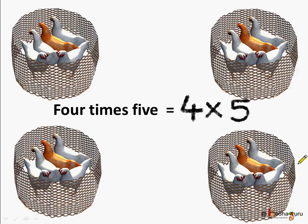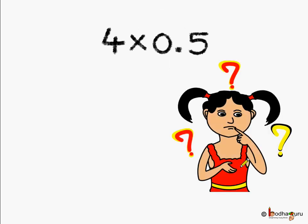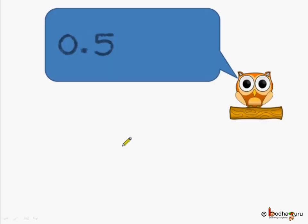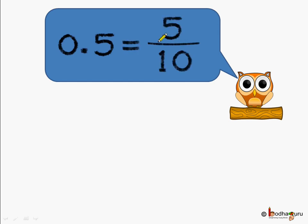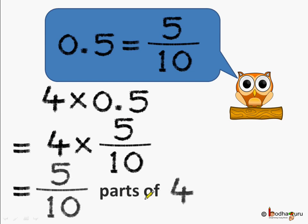We do simple multiplication here — the simple multiplication without decimal point. That's the use of multiplication. If somebody wrote four multiplied by zero point five, what does that mean? Is it same as four times five? No! Four multiplied by zero point five is not the same as four times five. Then what is it? Let's try to find out. What is zero point five? Zero point five is five by ten, or five parts out of ten parts. So four multiplied by zero point five is nothing but four multiplied by five by ten. Or we can say it's five by ten parts of four. Zero point five is equal to five by ten.